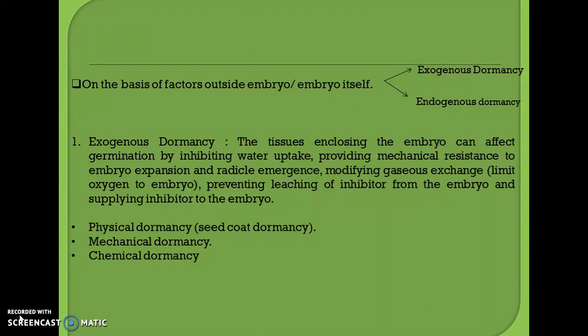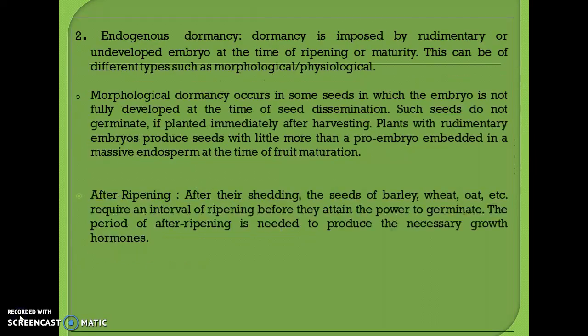Germination in such seeds does not occur until the seed coats are softened, either by creating moist or warm conditions during storage or by the activity of microbes. In chemical dormancy, chemicals accumulate in fruit and seed covering tissues during development and remain within the seed after harvest. This is common in fleshy fruits such as citrus, cucurbits, stone fruits, and pear. Chemical substances associated with inhibition include various phenols, coumarin, and abscisic acid, which can strongly inhibit germination.